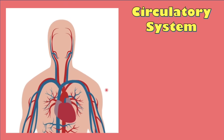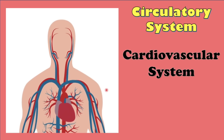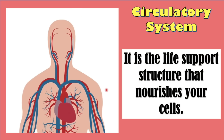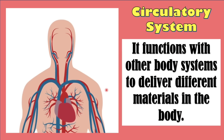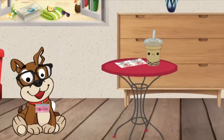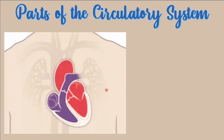Now, let us proceed to the second organ system, and that is the circulatory system. The circulatory system is also known as the cardiovascular system. This system is the life support structure that nourishes your cells. It functions with other body systems to deliver different materials in the body. Now, let us proceed to the major parts of the circulatory system.